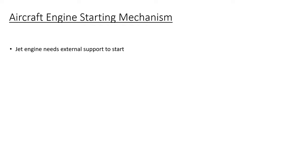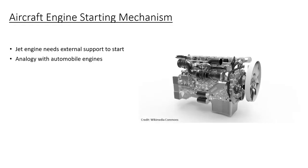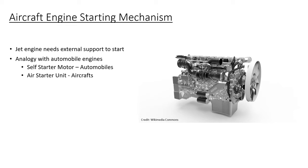Aircraft primary engines need external support to start. This is analogous to an automobile engine. Just like an automobile engine is fitted with a self-starter motor to start the engine, after which you can control its speed with the throttle, you can think of ASU as serving the exact same purpose. ASU starts the main jet engines, after which it is disconnected and pilots take control of the throttle to control engine speed.